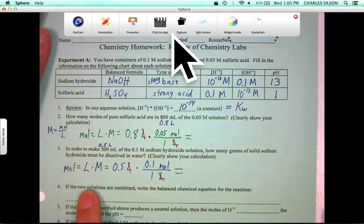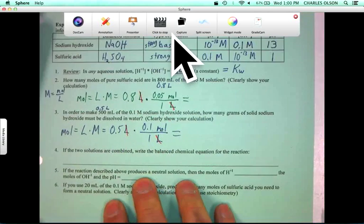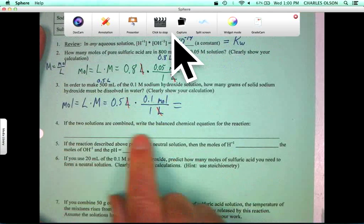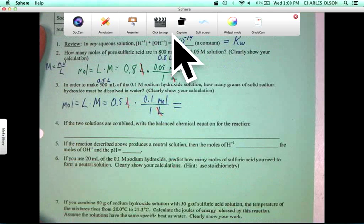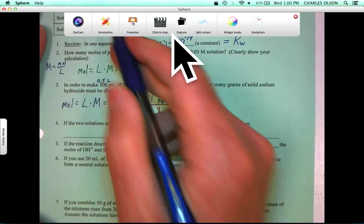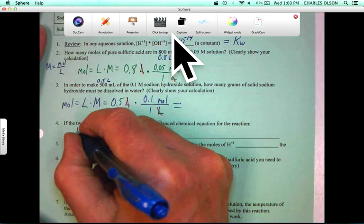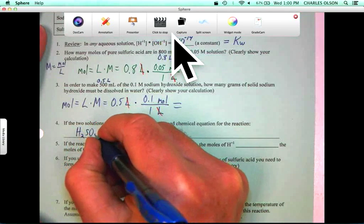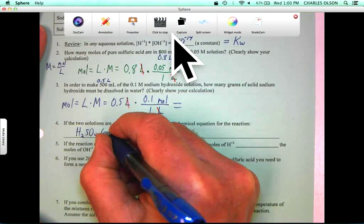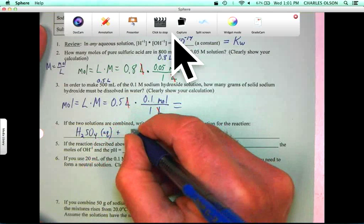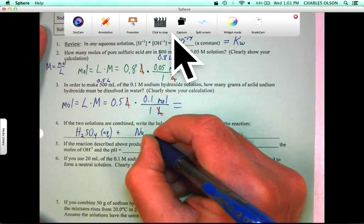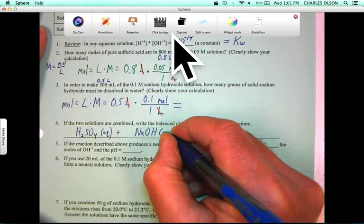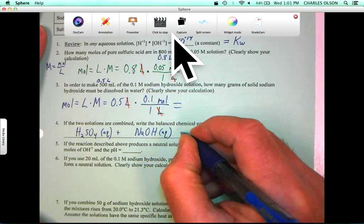So, the balanced chemical equation. Well, we're adding the acid and the base. So, let's see, we've got the H2SO4, which is aqueous, plus, leaving space for a coefficient, NaOH, also aqueous, reacts to form.